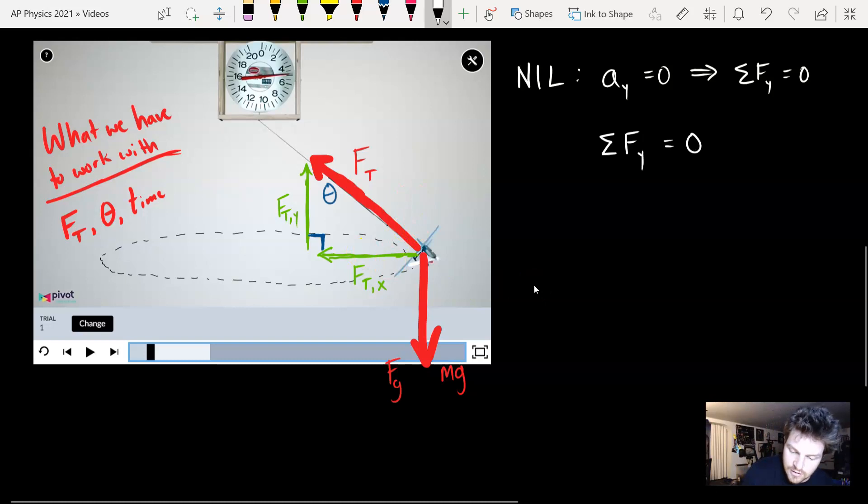Now all I need to do is net these forces in the y direction equal to each other. So I have force of tension in the y, and that's positive because it's going up, and then plus the negative force of gravity, and that equals zero. And the reason why I put that negative there is it's pointing in the downward negative direction, so I put that negative in front.